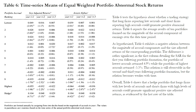Table 6 shows the time-series means of equal-weighted portfolio abnormal stock returns, testing the extension of hypothesis 2 — whether a trading strategy that goes long firms reporting low accruals and shorts firms reporting high accruals generates positive abnormal returns. Table 6 exhibits a negative relation between the magnitude of accrual components and size-adjusted returns. For example, in the first year following portfolio formation, the lowest-accruals portfolio returned 4.9 percent while the highest-accruals portfolio returned negative 5.5 percent. This relation is still observable in the second and third years but becomes weaker over time. Overall, Table 6 shows that a hedge portfolio long low-accrual firms and short high-accrual firms can generate significant positive size-adjusted returns.